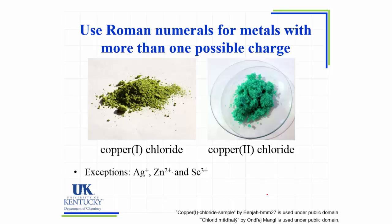When looking at transition metals, remember they can have a variety of charges. If I just say copper chloride, it doesn't tell me which version of copper is in the compound. So we include Roman numerals in the name, but only for metals that have more than one possible charge — all transition metals except silver, zinc, and scandium. For example, AgCl is named silver chloride because silver can only be +1, so no Roman numeral is needed.